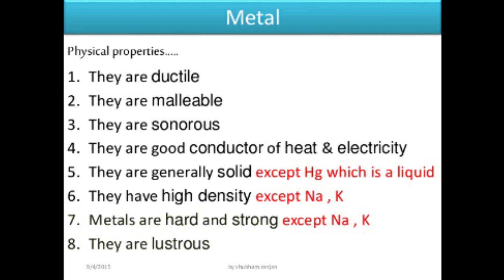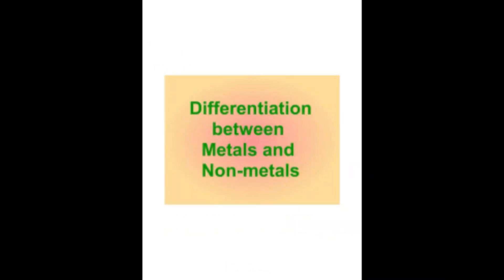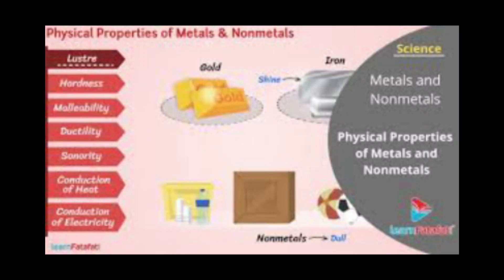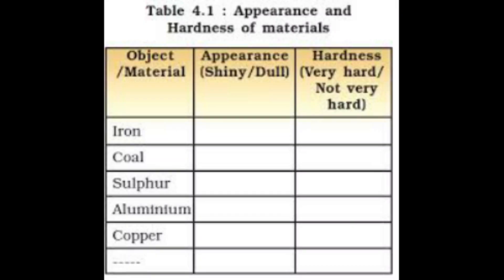Let us perform a small activity given in our textbook. Look at page number 44 and table number 4.1. You are familiar with a number of materials like iron, aluminium, copper, etc. Some materials have been given in table 4.1 — appearance and hardness of materials. The columns are: object/material, appearance, and hardness (very hard or not very hard).